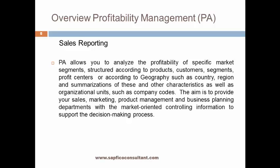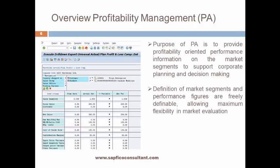Profitability management is more of sales reporting. It allows you to analyze the profitability of specific market segments, structured according to product, customer, segment, profit center, or according to geography such as country, region, and any combination of these or other characteristics. The aim is to provide your sales, marketing, product management, and business planning departments with market-oriented information to support the decision-making process. The breakdown of profitability is available in PA based on customer, product, country, sales group, sales office, trading partner, plant, or any form of freely definable characteristics, which allows more flexibility in market evaluation. It helps corporate planning and decision-making.